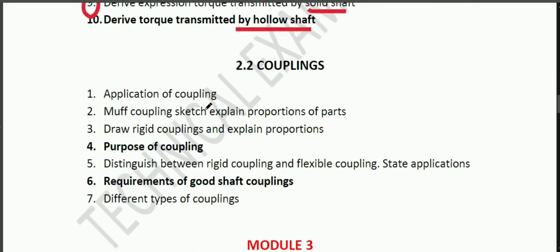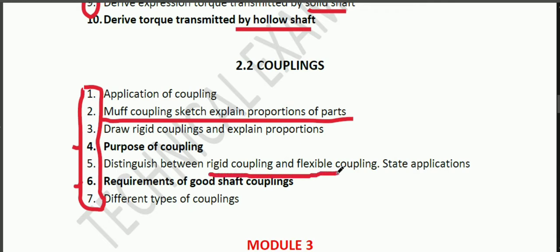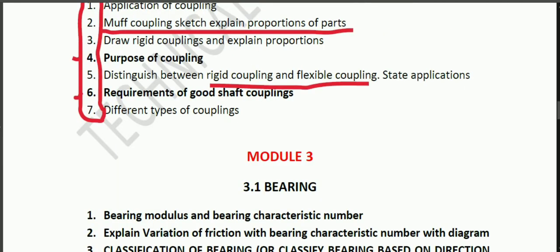Then the coupling — there are different types of coupling. The purpose of coupling and the requirements of a good coupling. Then flexible coupling, comparison, and application. This is module 3, which covers bearing, governor, flywheel, and cam.